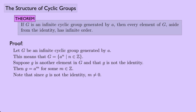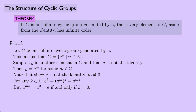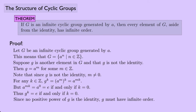Since g is not the identity, m cannot be 0. For any integer K, g^K = (A^m)^K = A^(mK). Now A^(mK) = A^0 = the identity if and only if K = 0, because m ≠ 0. Thus g^K equals the identity if and only if K = 0, so no positive power of g is the identity, meaning g has infinite order.